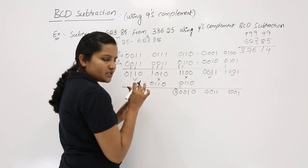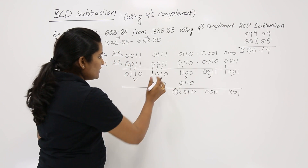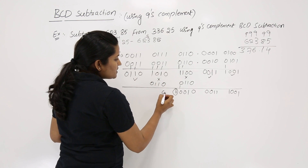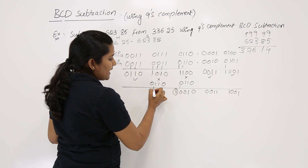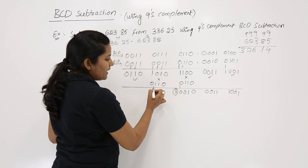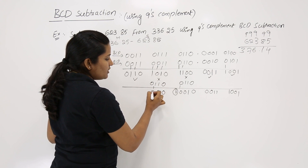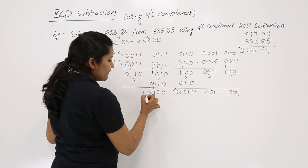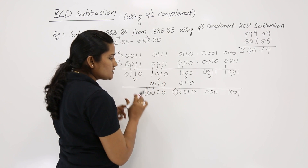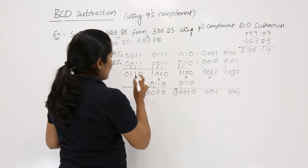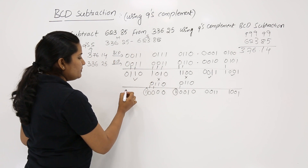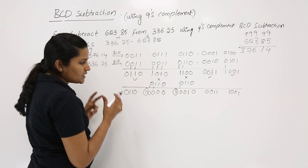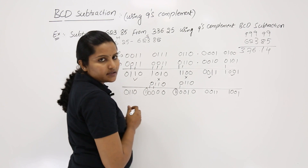Keep that carry aside. For the second error group, adding 6: 0+0=0, 1+1=0 carry 1, 1+1=0 carry 1, 1+1=0 carry 1. Keep this carry aside as well. The final digit group has no error so take it as-is.